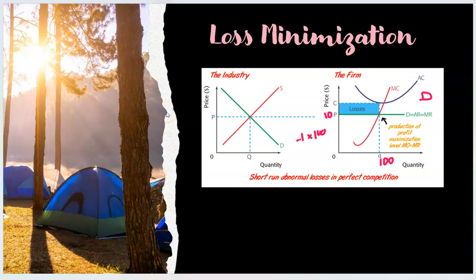Hi guys and welcome back to chapter 8. We are now on video 3. The last thing we did, which was incomplete, was the loss minimization part. We were looking at the fact that right now the average total cost is above the price. When you have an average total cost that is above the price, this company is losing. It's just trying to lose as little as possible.